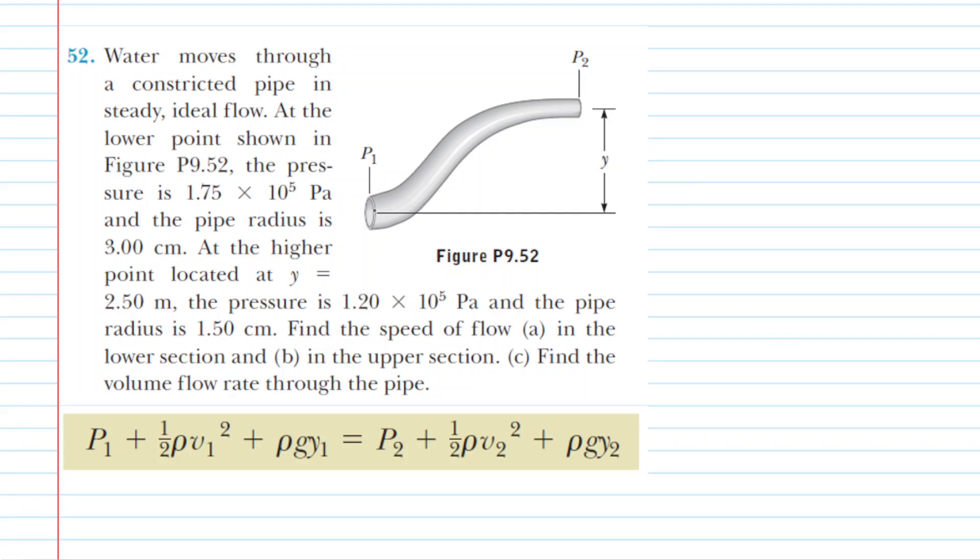So in this question, we have a fluid, water, that is in motion. It's traveling through this constricted pipe. And when you have fluids in motion, you're going to be solving your problem by using Bernoulli's equation, which we have outlined in that yellowish box below.